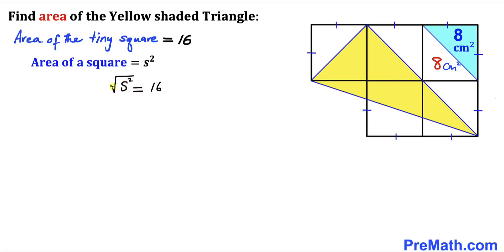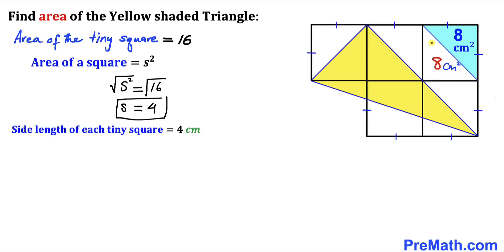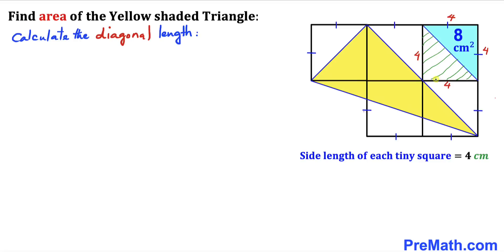Taking the square root on both sides, the side length s equals positive 4. Therefore the side length of this tiny square is 4 centimeters on each side.